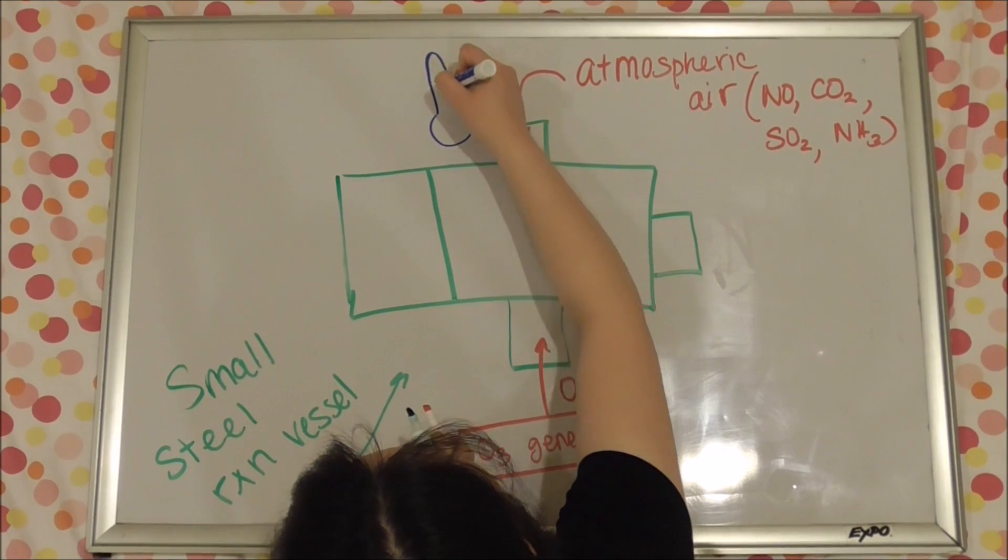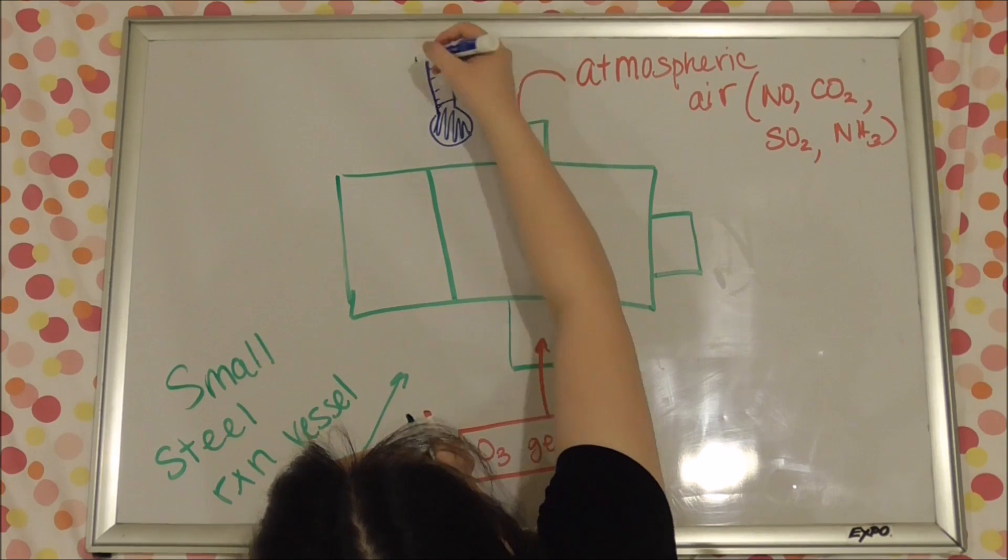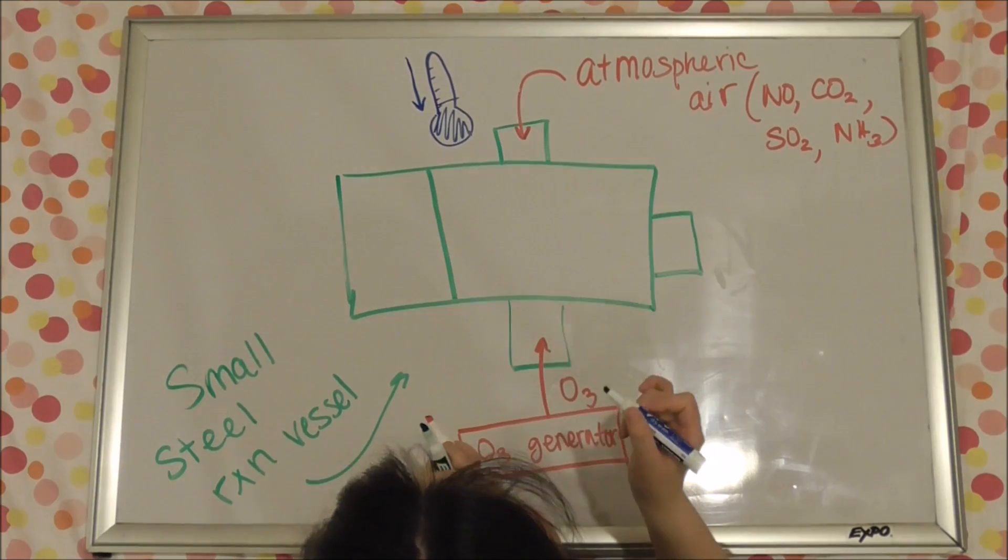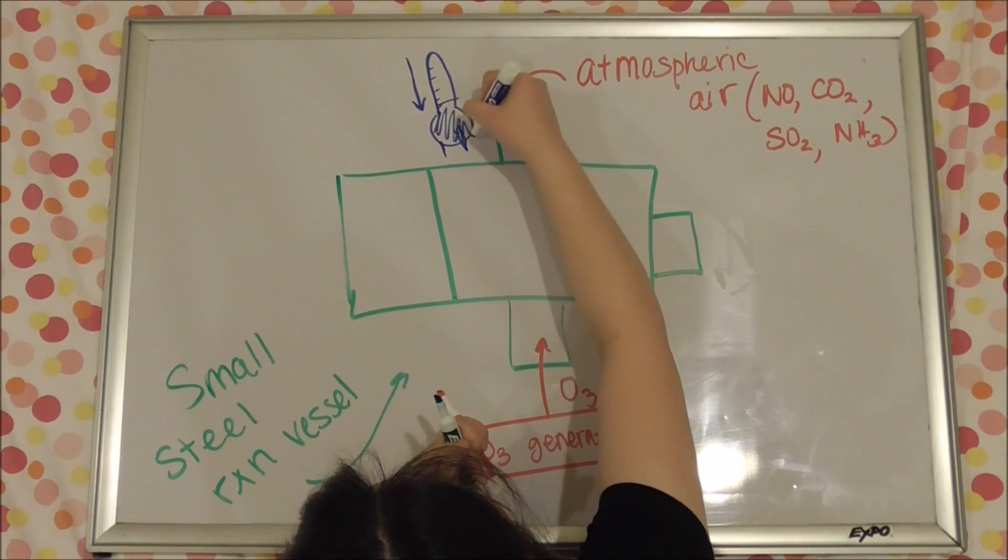However, in order to measure the concentration of NOx accurately, we have to keep conditions under control. Basically meaning we have to keep temperature low in order to prevent other atmospheric gases from interfering with the reaction.